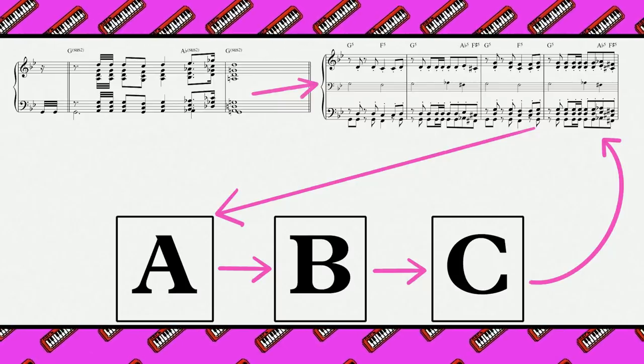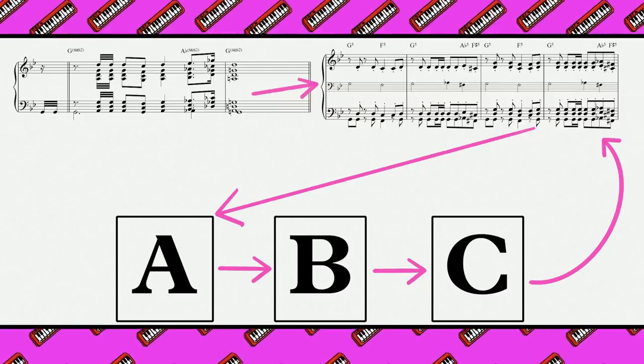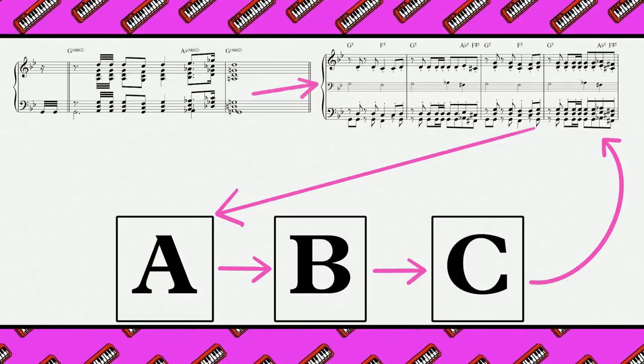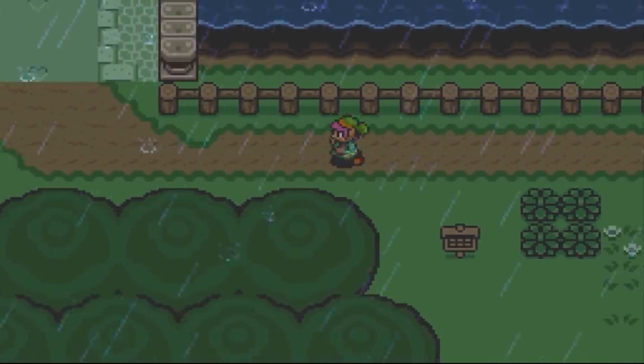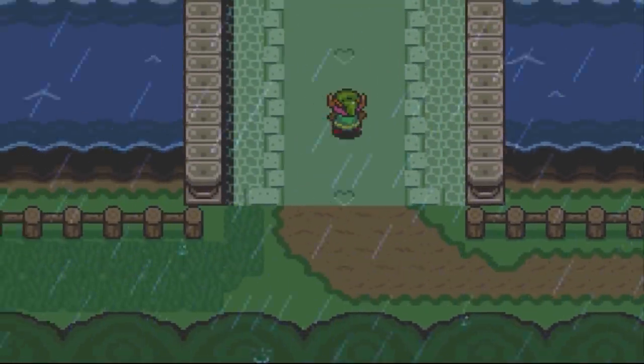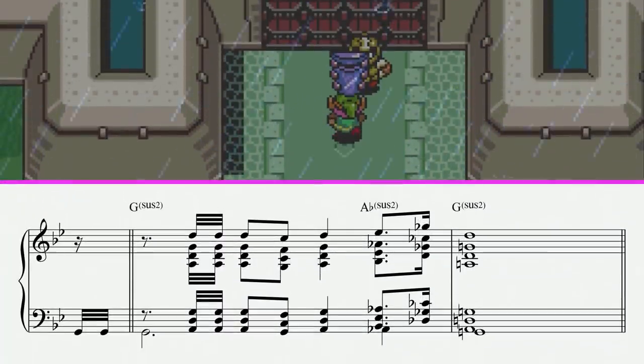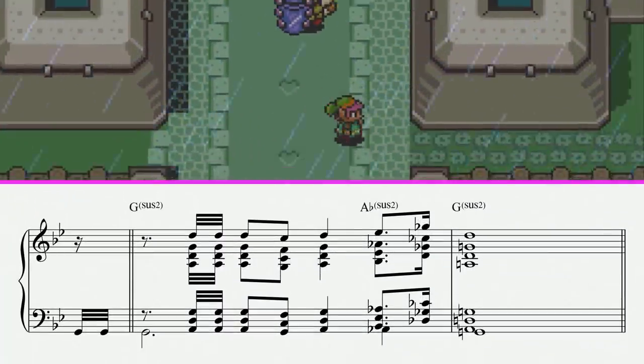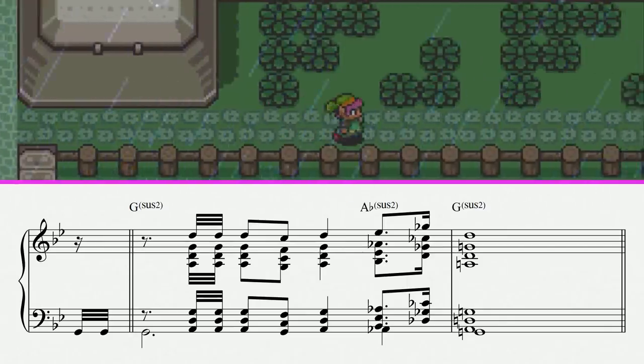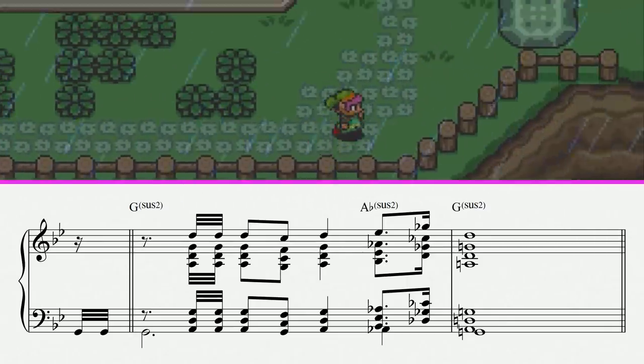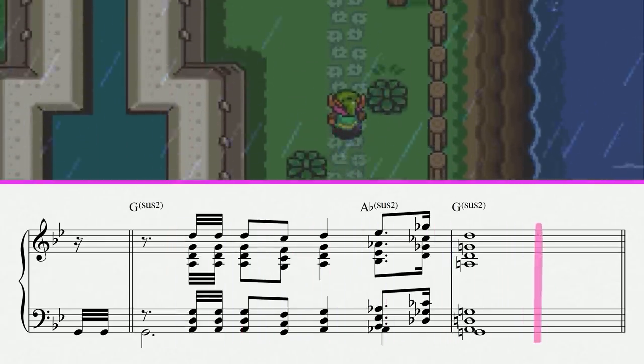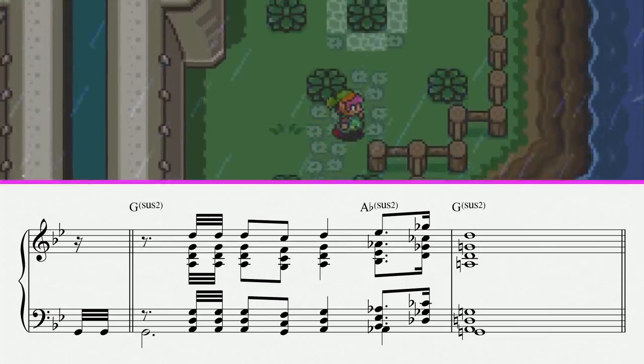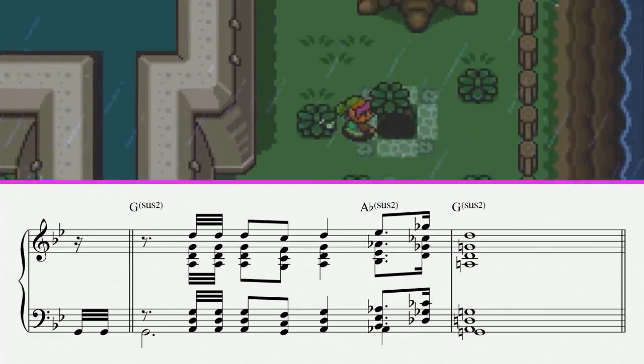What I want to draw your attention to as we analyze this piece is how every single note is placed with significance. Every musical idea either develops an idea that came before, or foreshadows an idea to come later, or both. Take the intro. It's big. It's daunting. It sets the mood for the majestic yet intimidating Hyrule Castle beautifully. But more than that, it puts forward three musical ideas.